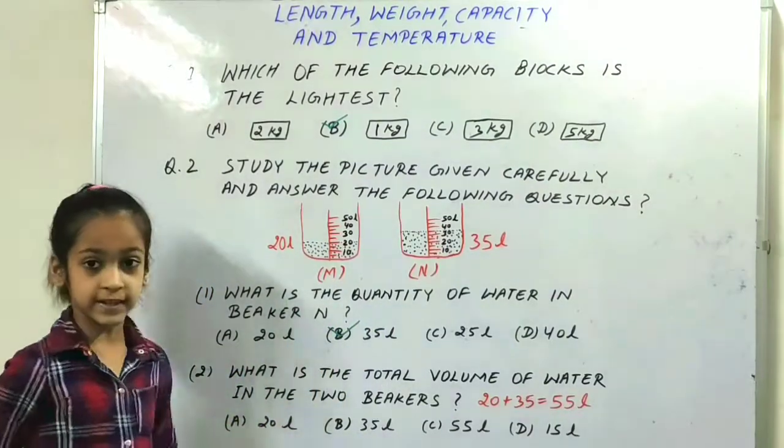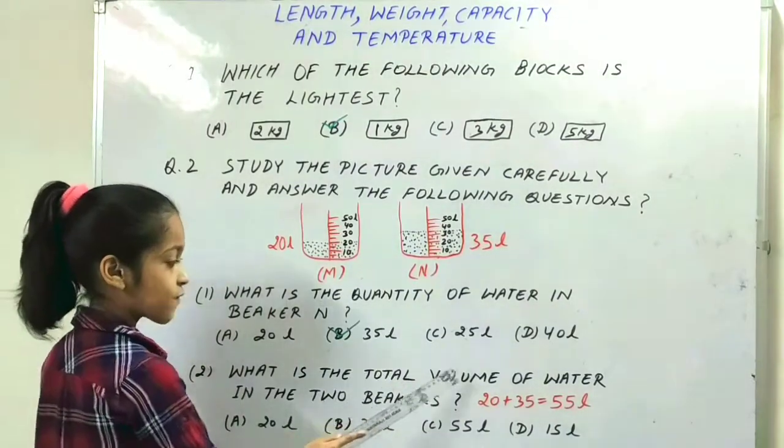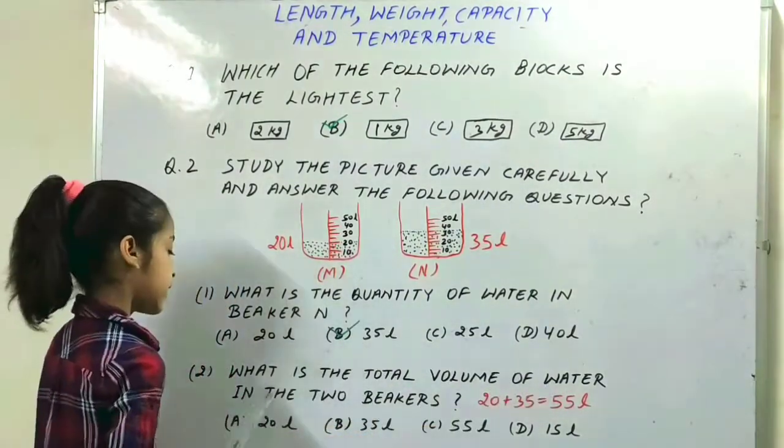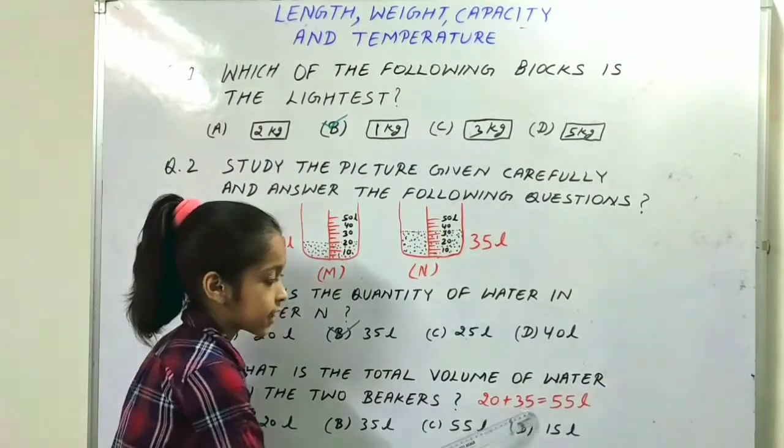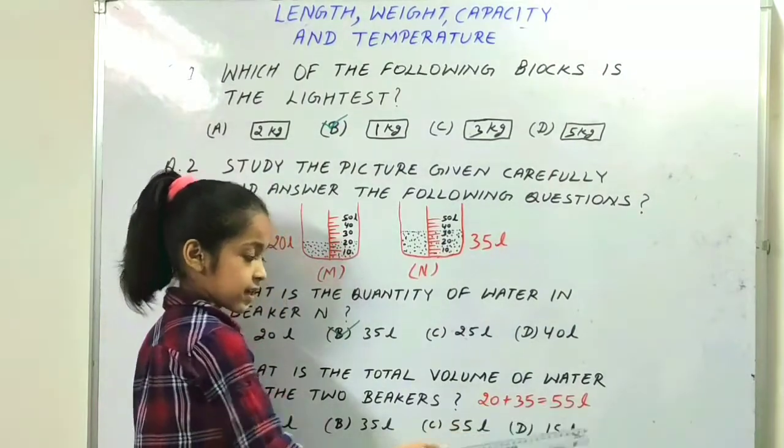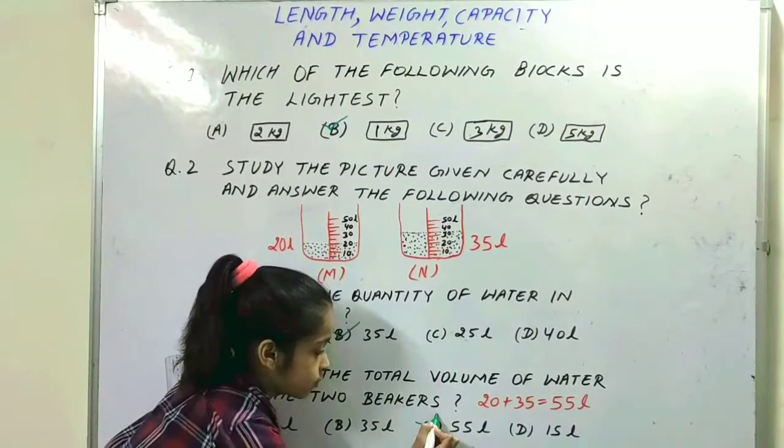Our next question is: what is the total volume of water in the two beakers? So 20 plus 35 is equal to 55 liters. Option C is the right option.